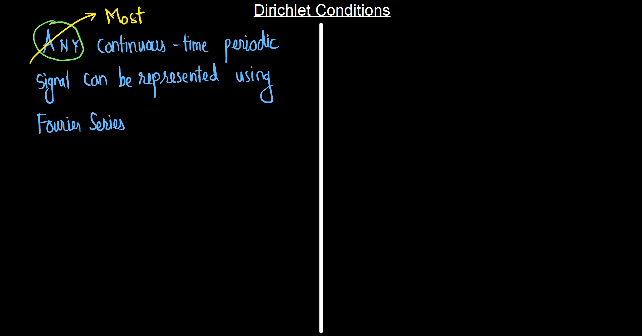Those conditions were given by P.L. Dirichlet, a scientist and mathematician. These conditions are called Dirichlet conditions. Dirichlet conditions are the set of conditions that guarantees the Fourier series representation of a periodic signal.